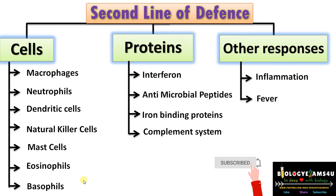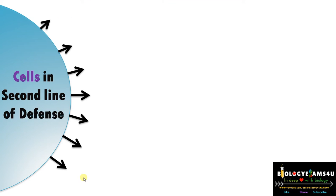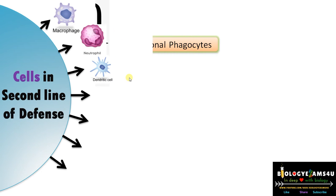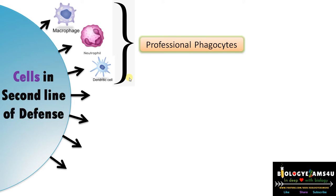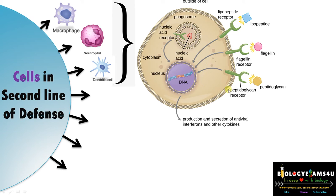The first three defensive cells — macrophages, neutrophils, and dendritic cells — are called the professional phagocytes. On the surface of a macrophage there are receptors that recognize pathogenic particles. These receptors are called pattern recognition receptors, and the pathogenic particles are called pathogen-associated molecular patterns. One classical example of a pattern recognition receptor is the toll-like receptor, which recognizes lipopeptides, flagellin (the protein that makes flagella), and peptidoglycan, the cell wall component of pathogens.